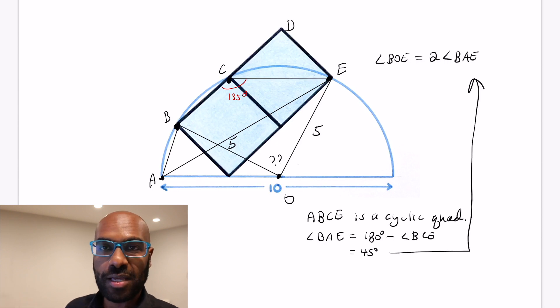And so the central angle BOE, as a consequence is twice that quantity, which then gives us that is 90 degrees. So that question mark angle that we're wondering about is actually a right angle. Very cool.